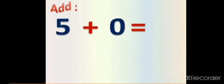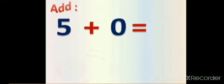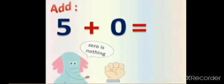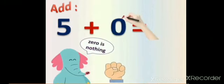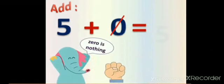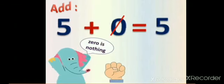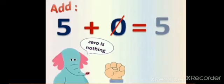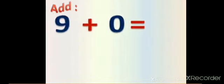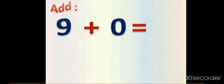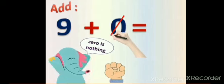5 plus 4 equals? Remember, 0 is nothing. Then when we see 0, we will say bye bye 0 — cross it out. Then 9 plus 0 equals? 5. 5 plus 0 equals? 5. 5 plus 0 equals 5. 9 plus 0 equals? 0 is nothing — 5.